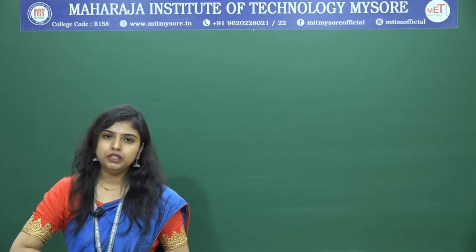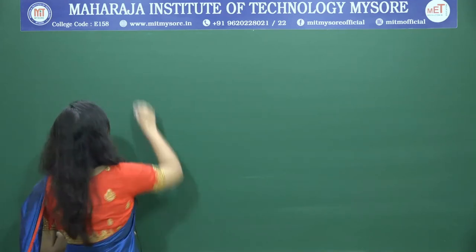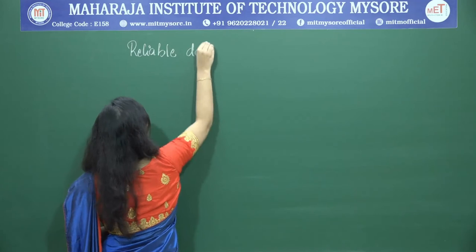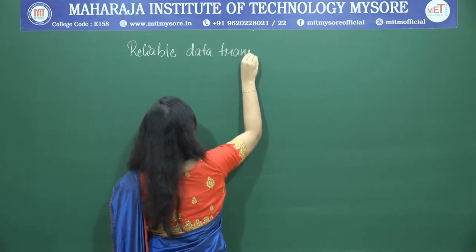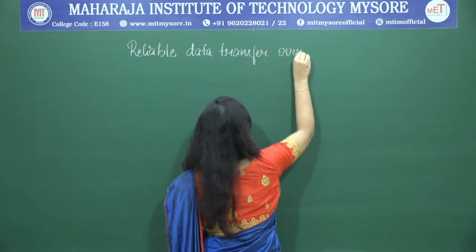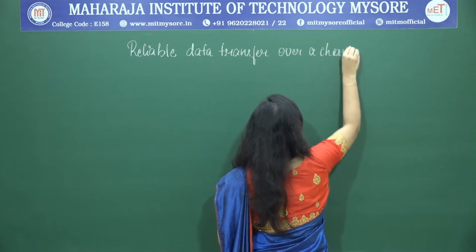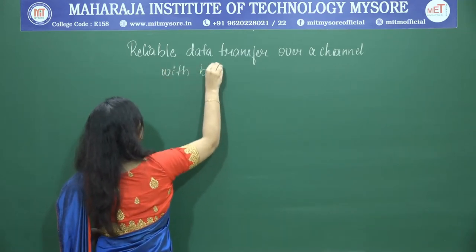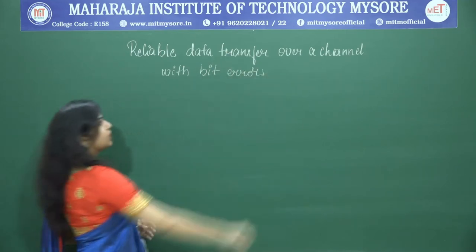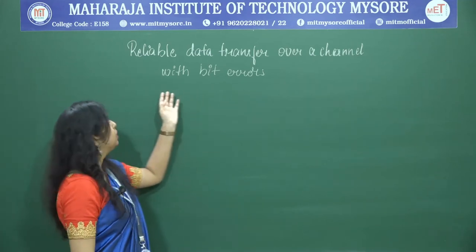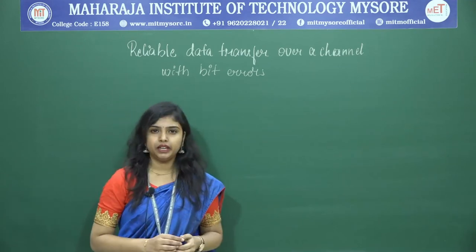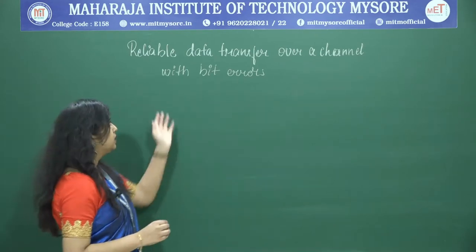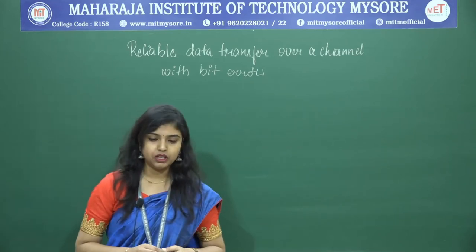In the last class, we were talking about reliable data transfer. We were looking at the scenario of reliable data transfer over a channel with bit errors — that means we are trying to build a reliable data transfer protocol which has a reliable channel, but there might be corruption of packets while travelling through the network.